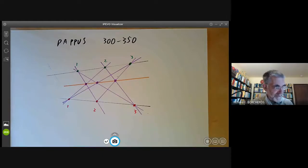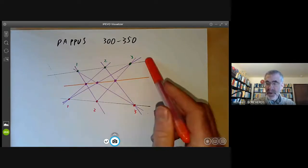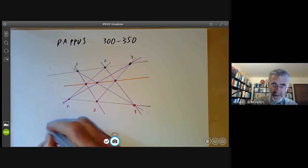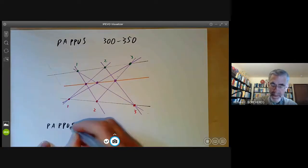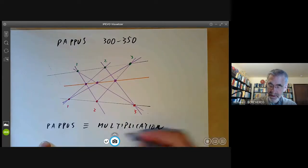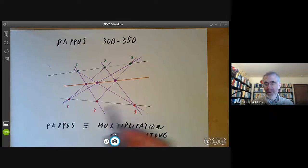Pappus's theorem, incidentally, turns out to be essentially equivalent to commutativity of multiplication. What this means is you can define a plane over any division ring. So we can say Pappus's theorem is equivalent to multiplication commutative. Because if you look at the analogous results in a plane over a division ring, you find that Pappus's theorem is true if and only if the division ring is commutative. In other words, a field.